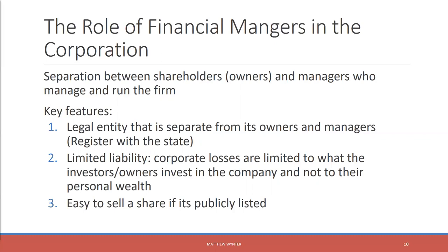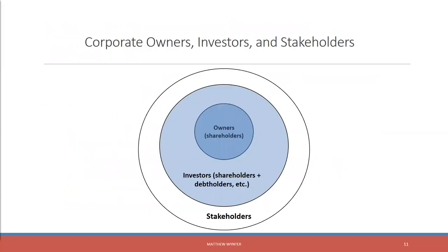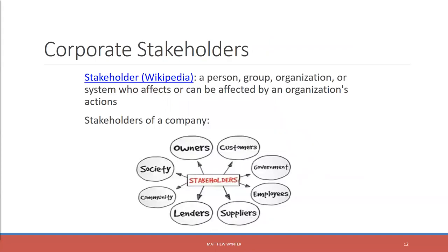A really great feature of the corporation is that it's very easy to sell a share if it's a publicly listed firm, and we'll look at lots of publicly listed companies. When we orient ourselves, we have owners who own the firm, and then investors — who can also be shareholders, but it's not just shareholders. You're also going to have debt: debt holders, which could be a bank giving you a loan or bondholders holding your bonds. All of that is distinct from your stakeholders. Stakeholders aren't limited to investors — they include owners, customers, government, employees, suppliers, community, society — basically anyone or any group that can be affected by or can affect the firm.